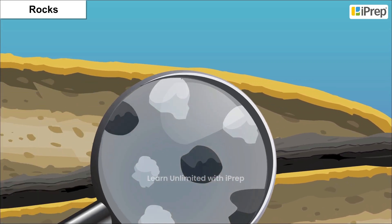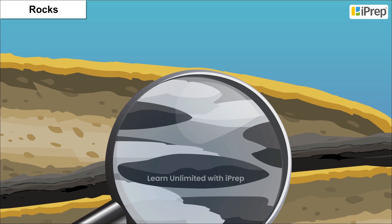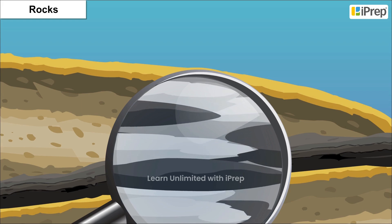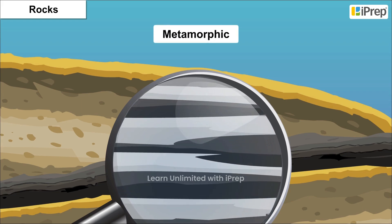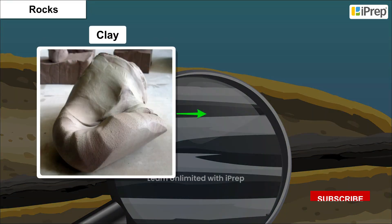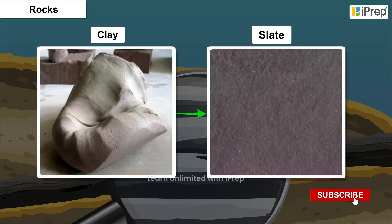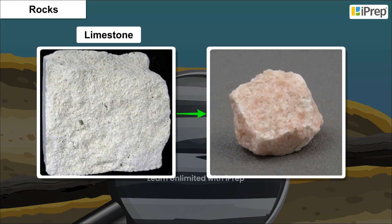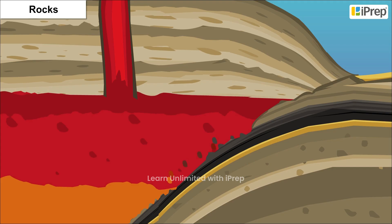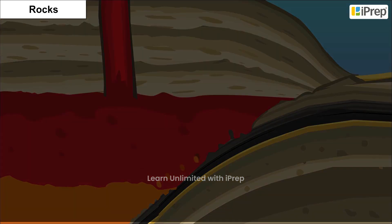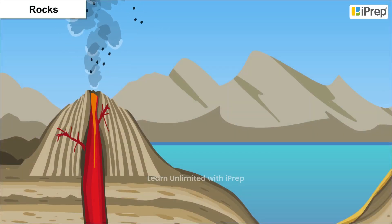Further, when igneous and sedimentary rocks get subjected to heat and pressure, their composition changes and metamorphic rocks are formed. For example, clay changes into slate and limestone into marble. These metamorphic rocks are under constant heat and pressure and melt to form molten magma again, and the cycle continues.